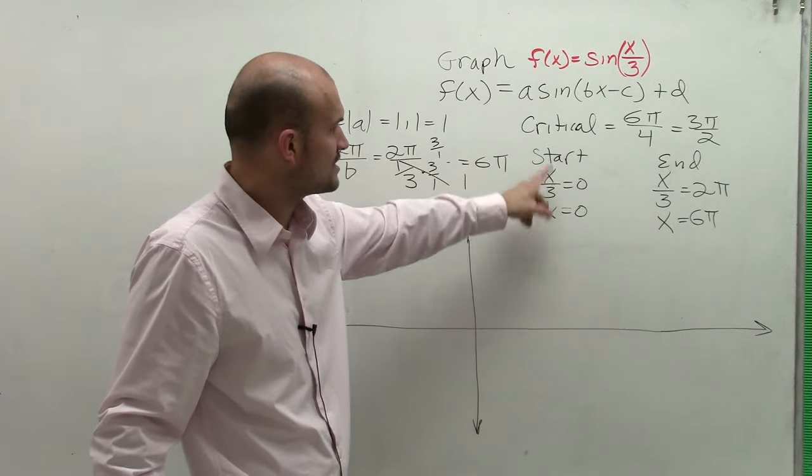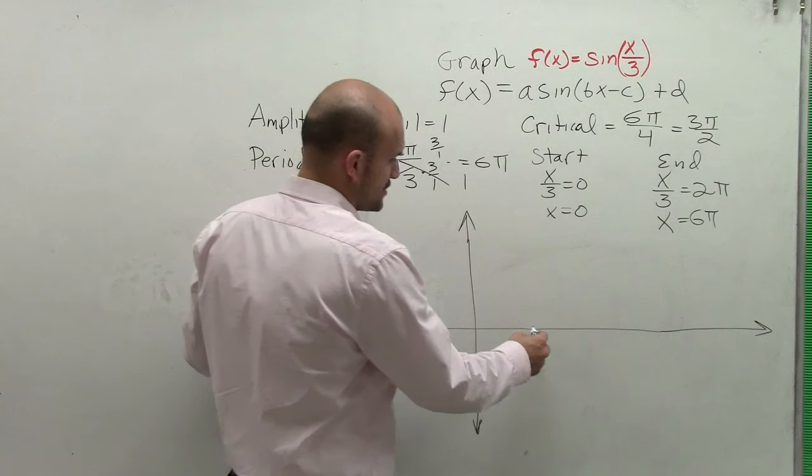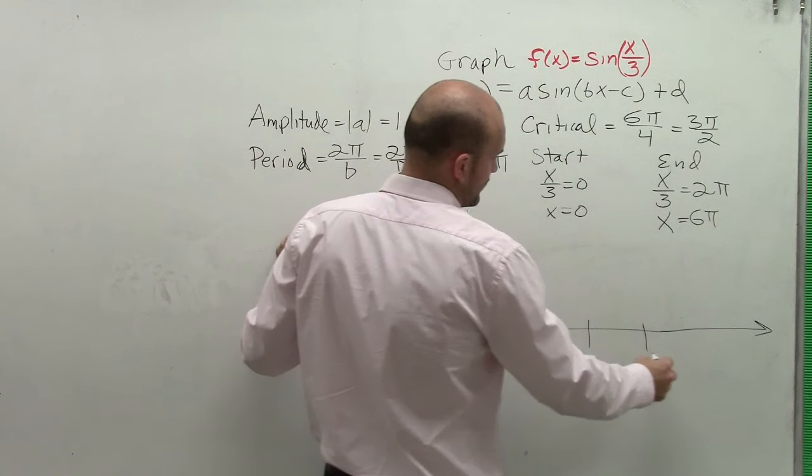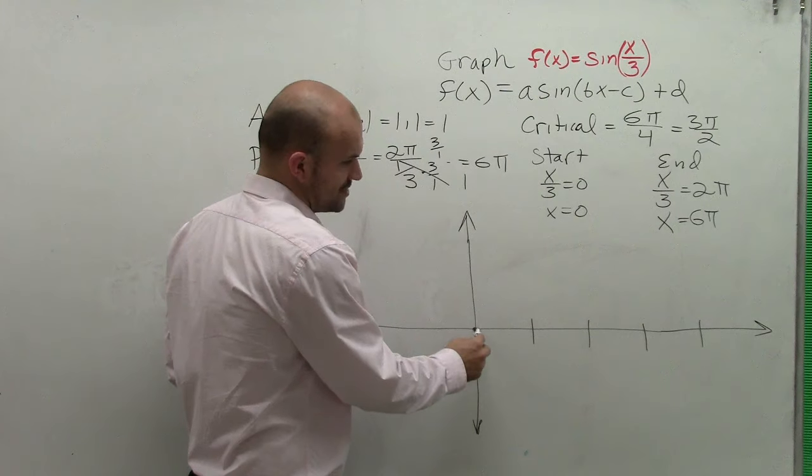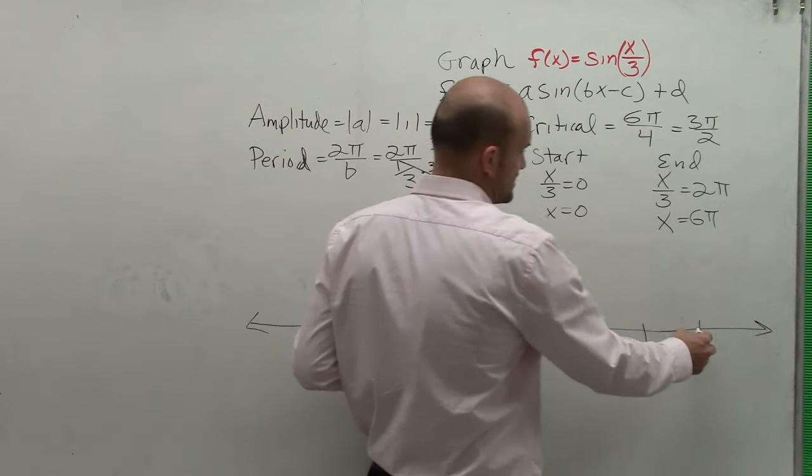So we know that our critical points, we're going to have four of them, right? So we're going to have 1, 2, 3, 4. Now, the start, we say, is going to be at 0, 0, and it's going to end at 6 pi.